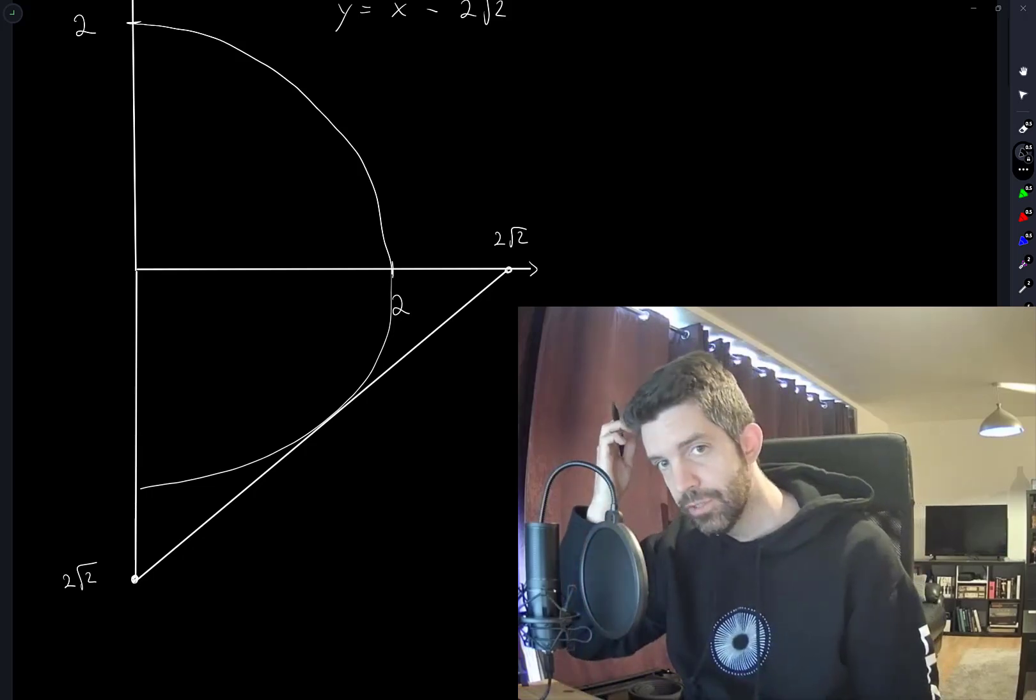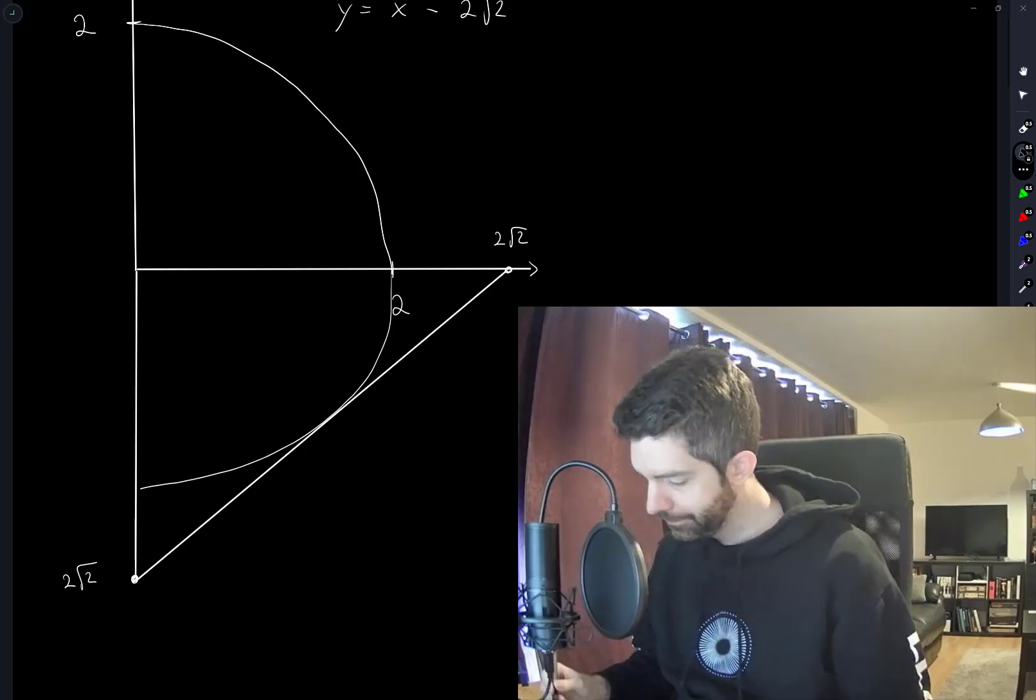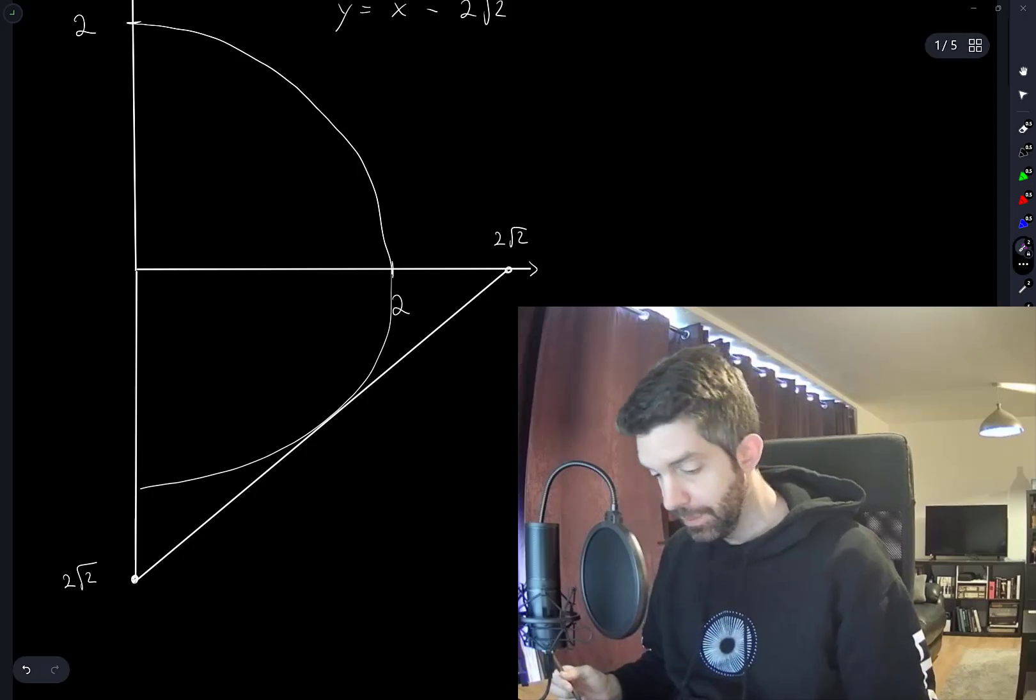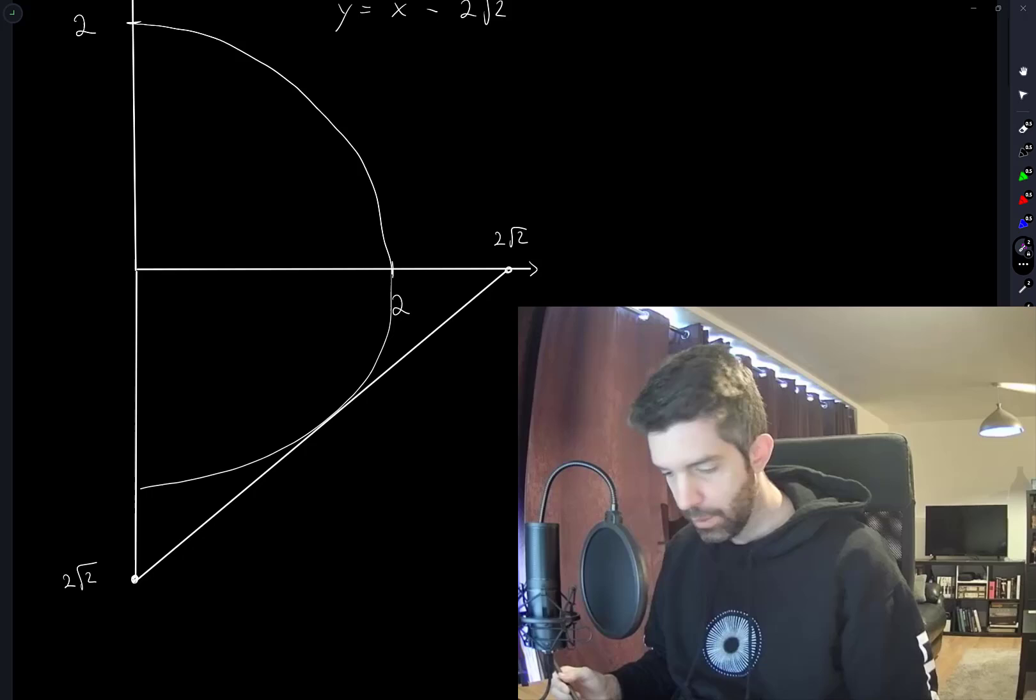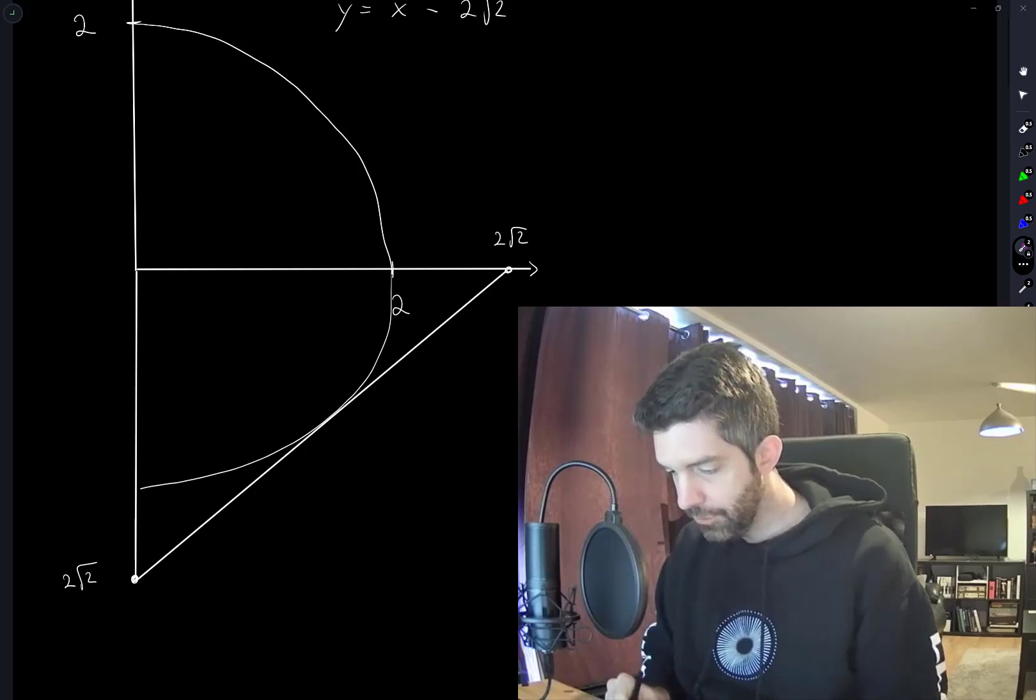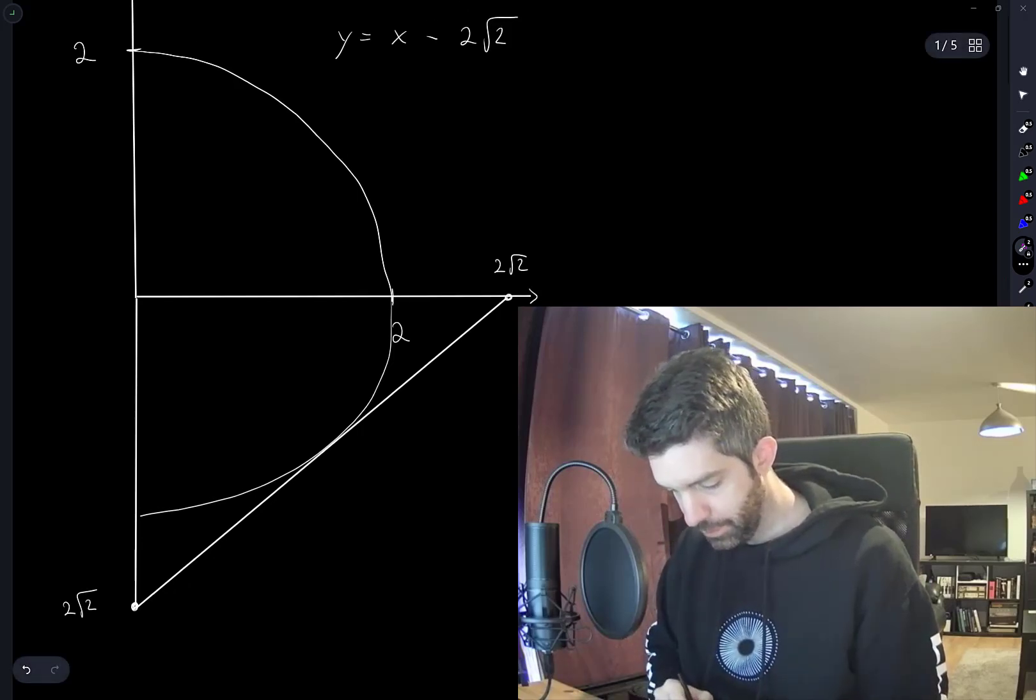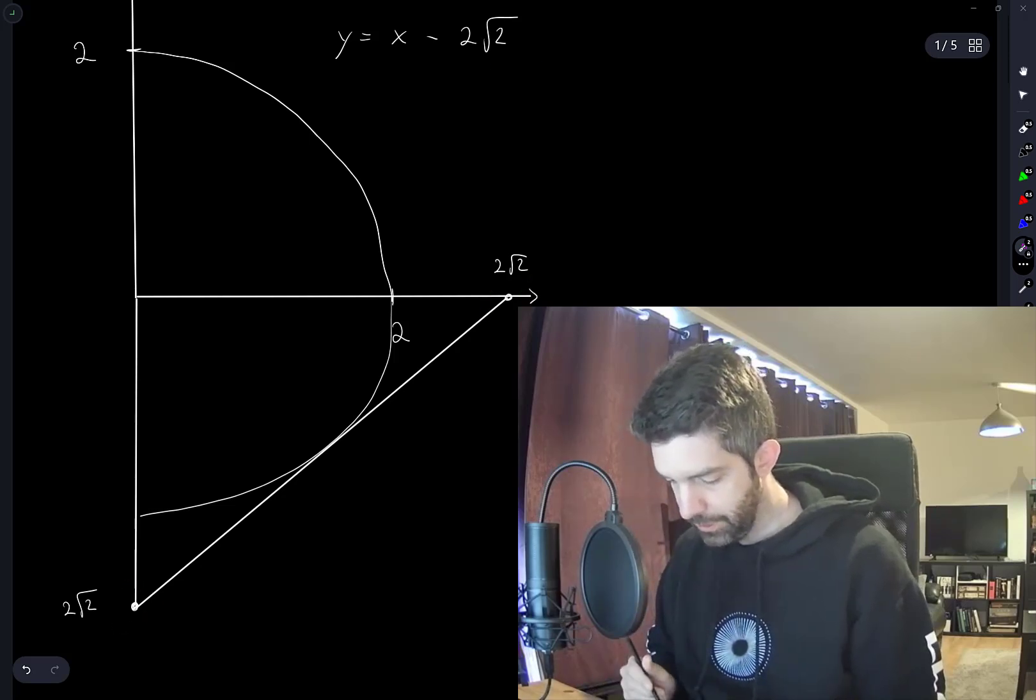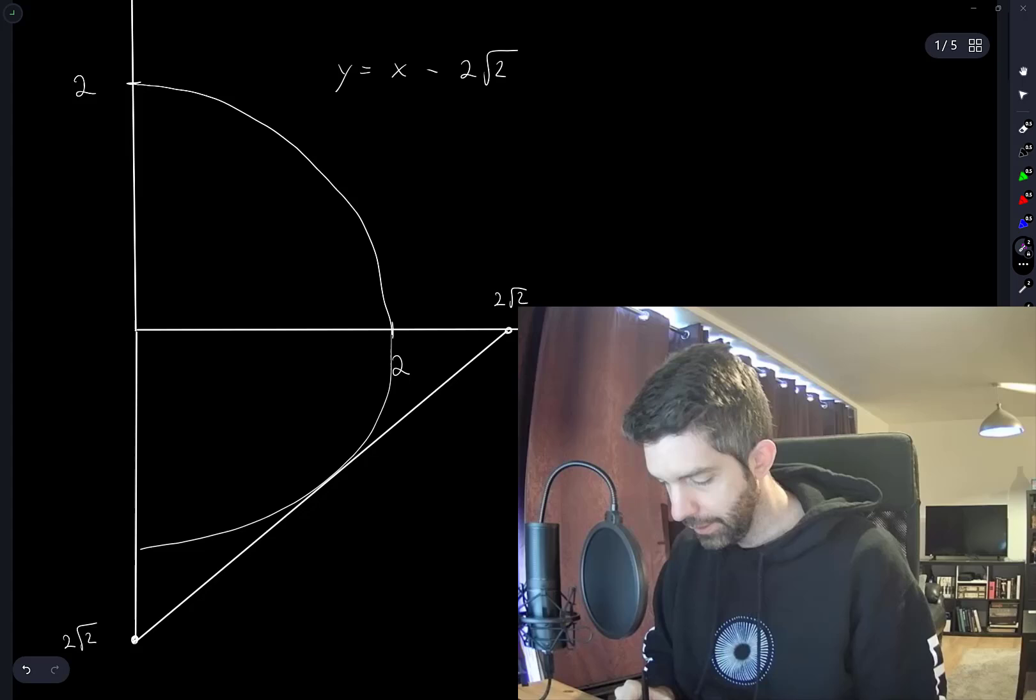We've done this by the process of elimination. It would be nice to actually work out how we can see that this line will be tangent. So what I want to do—I know that this line has these two endpoints, 2√2 and 2√2. What I want to do is take the halfway point in this line, which will be at √2.